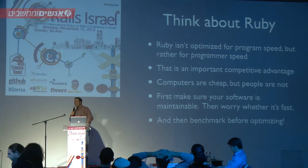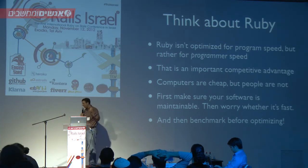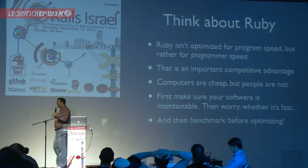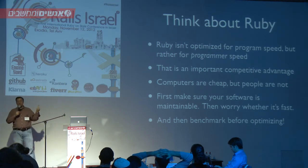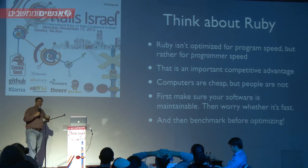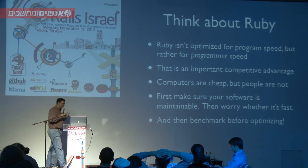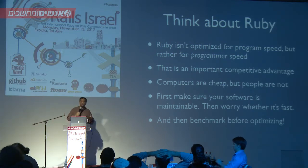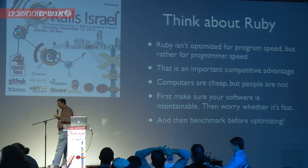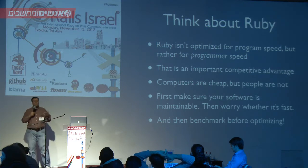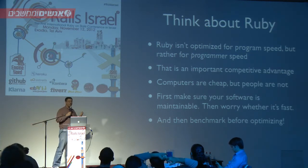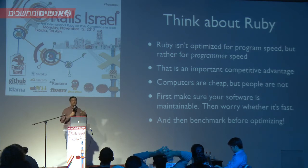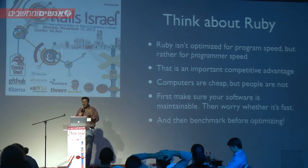If you do have some slowness in your application, when you finally want to optimize it, don't just say 'I think this part is slow.' Actually benchmark it. There are many ways to benchmark in Ruby and in Rails — built-in modules, methods, and classes that allow you to do it. You have third parties like New Relic that do a fantastic job of displaying things graphically and pinpointing the problems. Don't start optimizing until you've really figured out where the problem is.